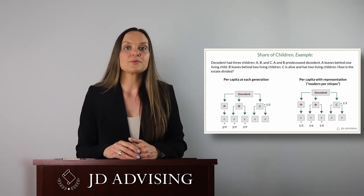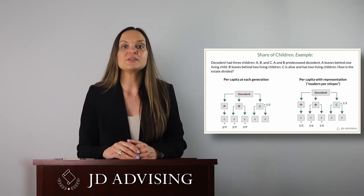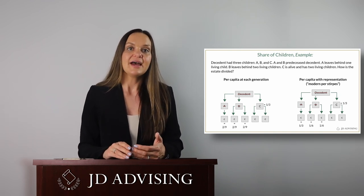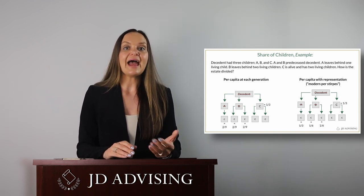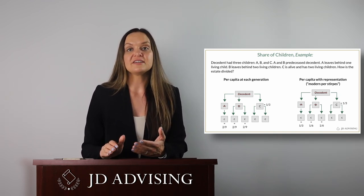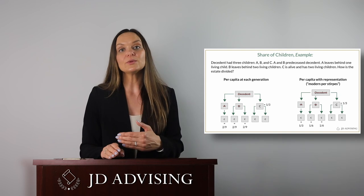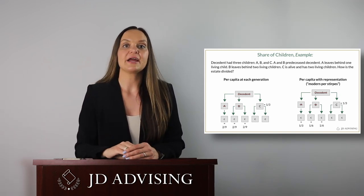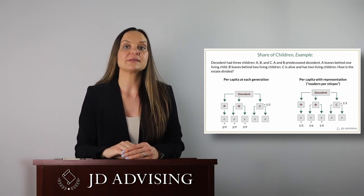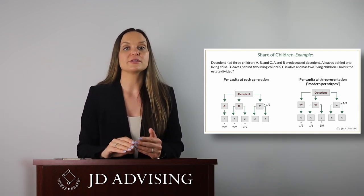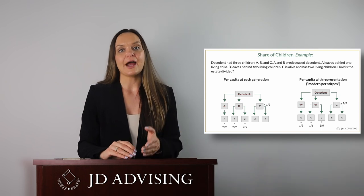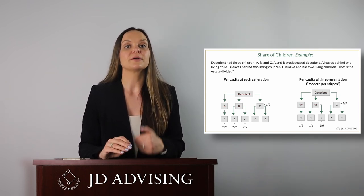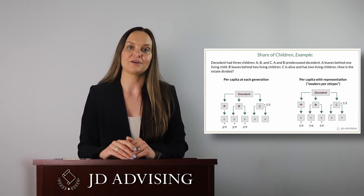Under per capita with representation, we start the same way — C gets a third because they're alive. Now, instead of adding up A and B's one-third and dividing it equally at the next generation line, A's share and B's share simply flow to their children. So A's child will get A's one-third, and B's children will share B's one-third.